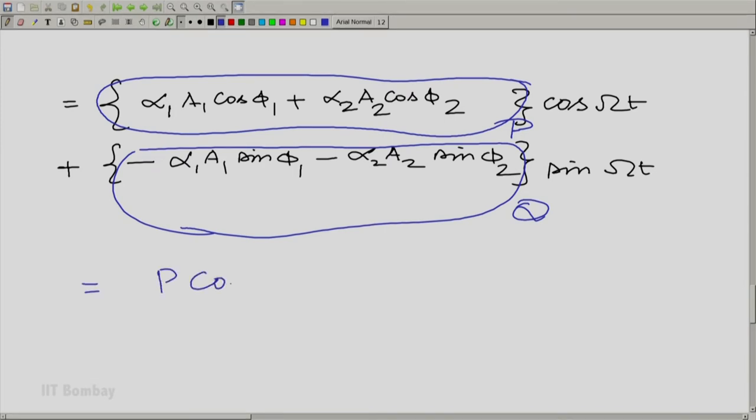So this is P times cos(Ωt) plus Q times sin(Ωt).